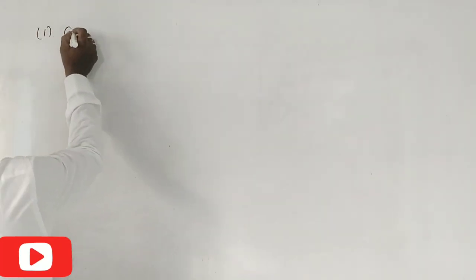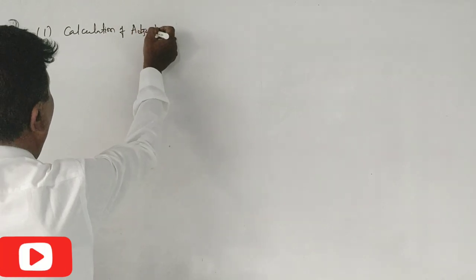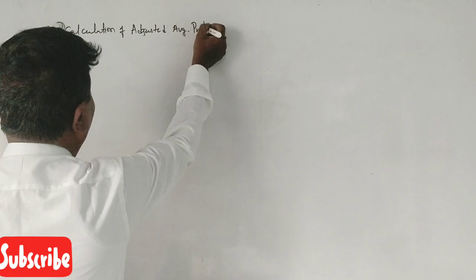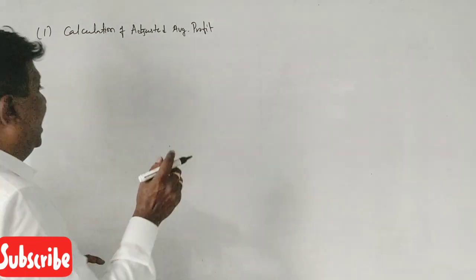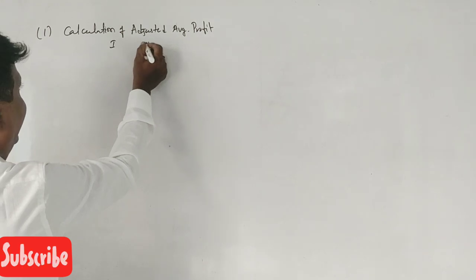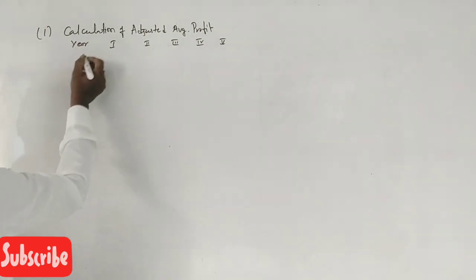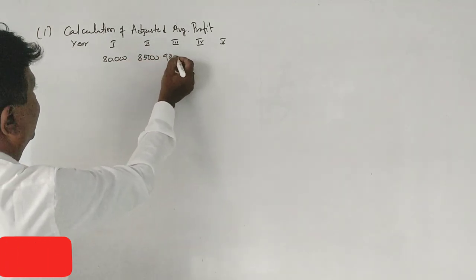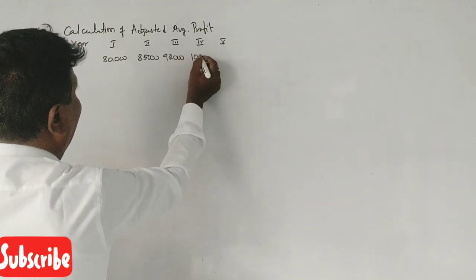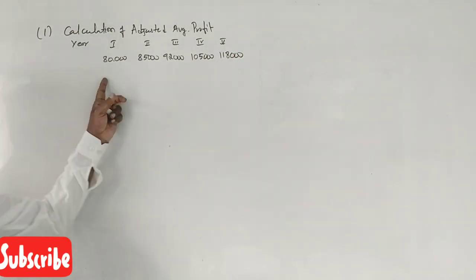The first step is the calculation of adjusted average profit. We list the profits for the first year, second year, third year, fourth year, and fifth year: 80,000; 85,000; 92,000; 1,05,000; and 1,18,000. The profits are increasing in nature.